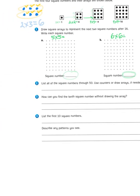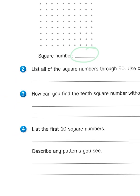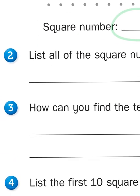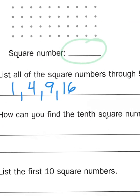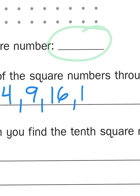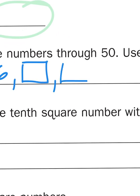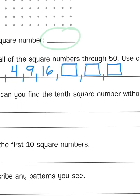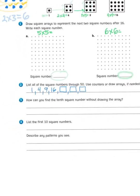Then it says list all the square numbers through 50 — that means the product of the multiplication problem, the square number under 50. So we have the first four: 1, 4, 9, 16. Then the product of 5 times 5, the product of 6 times 6, and one more. I'll let you figure out what would come after 6 times 6.